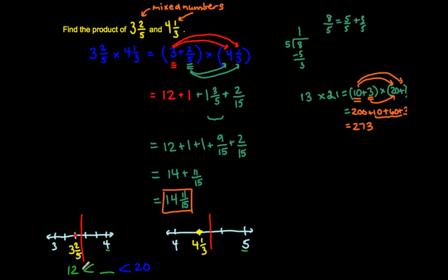So I know whatever the answer is, it has to be greater than 12 but less than 20. And if I look at the answer, it is more than 12 but less than 20. Now let's see where it's actually closer to. So I see that 3 and 2/5 is closer to 3 or 4. Well, in order for it to be closer to 4, it would have to be halfway or more, but it's not. So it's closer to 3. So what is 3 times 4? So the answer is going to be close to 12. And it is. 14 and 11/15 is closer to 12 than it is to 20.